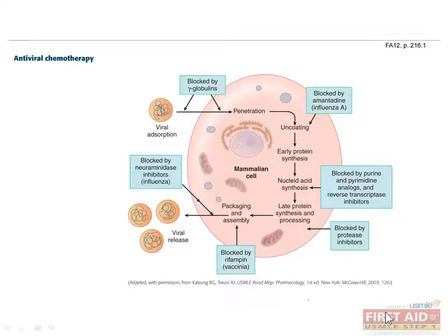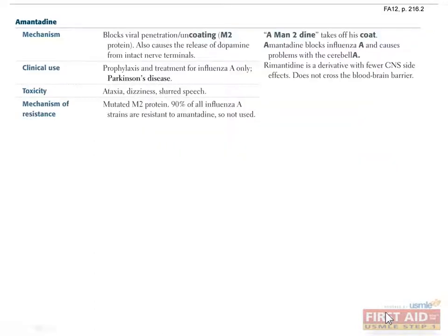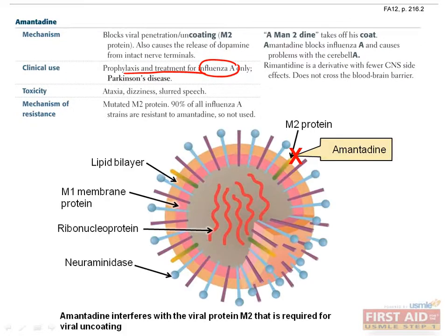Shown here is a representation of the different aspects of viral infection targeted by antiviral therapy, each of which will be discussed separately. Amantadine is used only in the prophylaxis and treatment of influenza A. It blocks viral penetration and uncoating of the M2 protein. Unfortunately, 90% of all influenza A strains are resistant to amantadine due to mutation in the M2 protein, so use of this medication is diminishing.